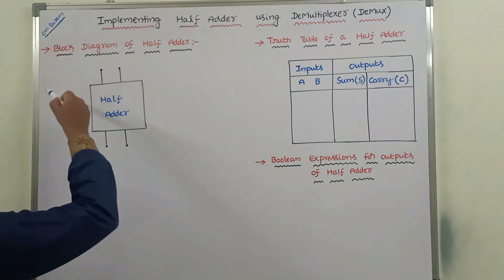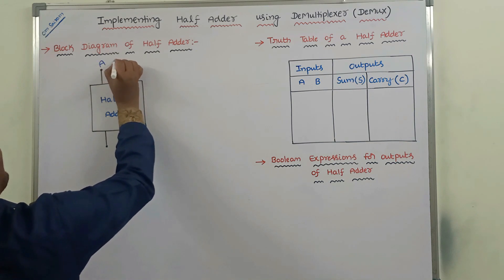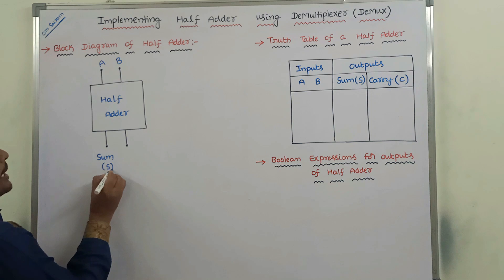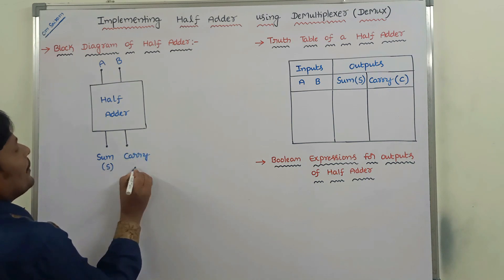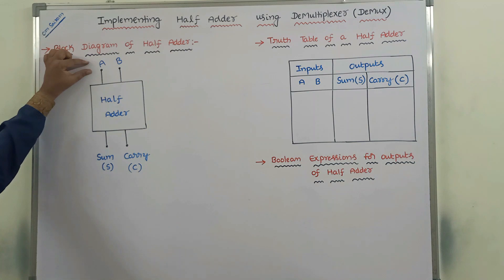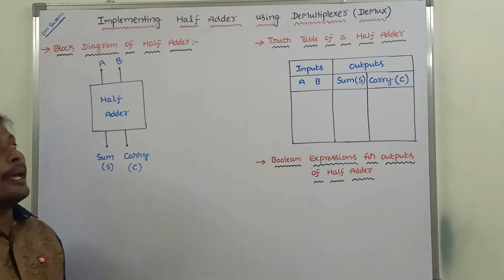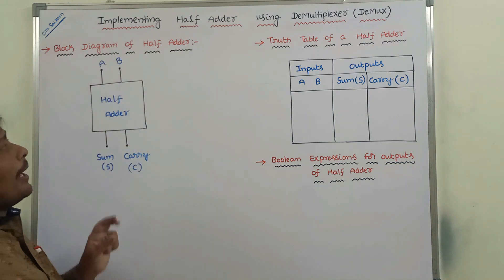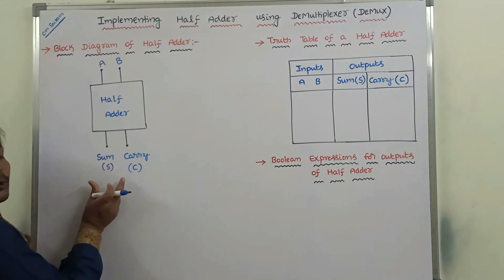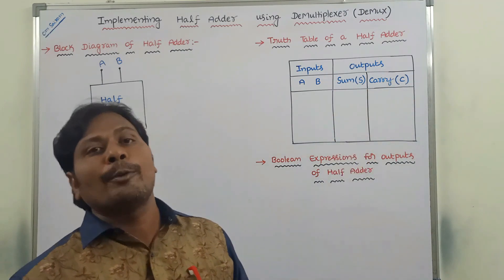This is the block diagram of half adder. Half adder can take two inputs A and B and produce two outputs: that is sum and carry output. How many inputs are there? Two inputs: A and B. How many outputs? Two outputs — sum output, denoted by S, and carry output, denoted by C.